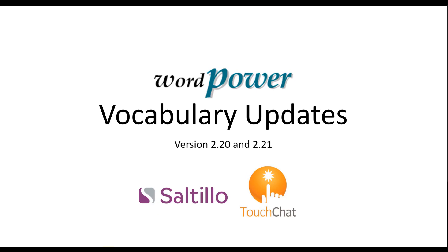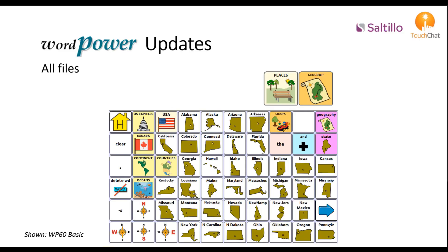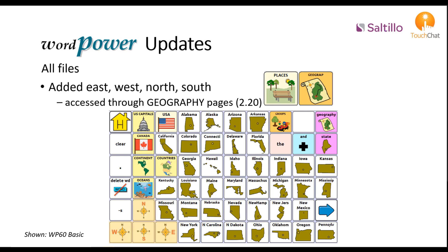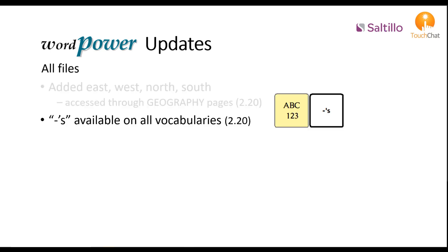WordPower offers a few changes with updates 2.20 and 2.21. All files have east, west, north, and south added and are accessed through the geography page. All files have the ability to create a possessive with apostrophe s, available in all files, typically on the spelling page.